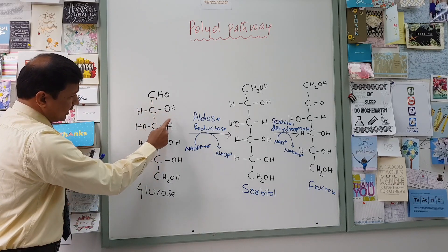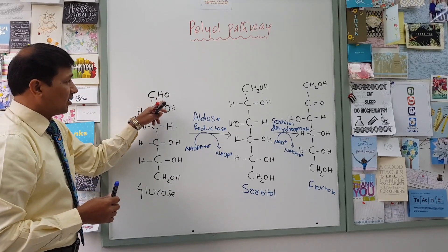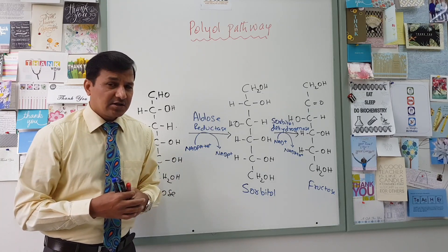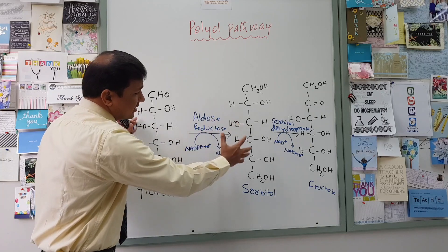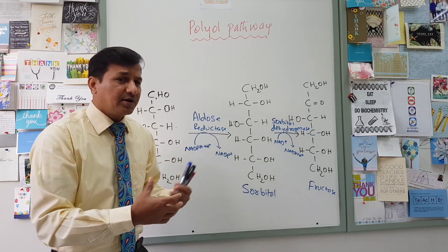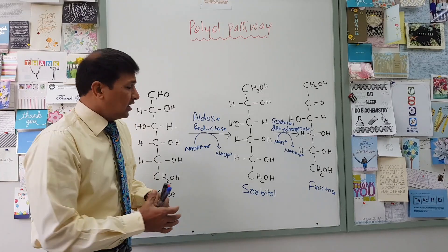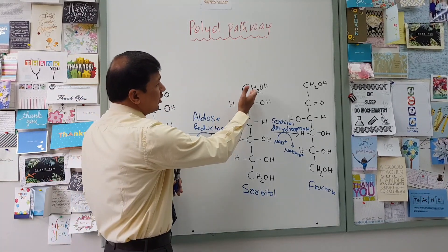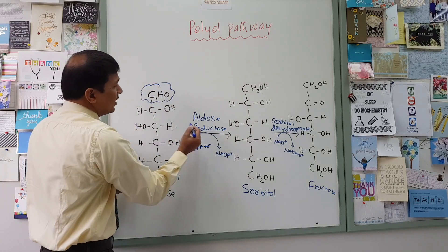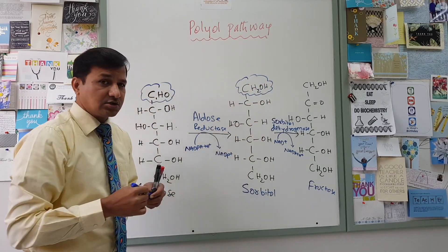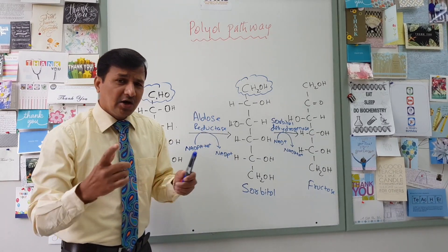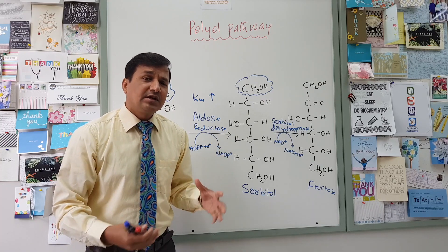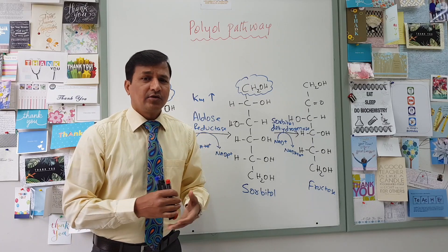When glucose is at high concentration, especially in insulin-independent cells, there is an enzyme called aldose reductase present in all tissues. Aldose reductase converts the aldehyde group of a monosaccharide into an alcohol group — the aldehyde group is reduced into CH2OH. The KM of aldose reductase for glucose is high, meaning it has lower affinity for glucose, so it is only active when plenty of glucose is available within the cell.